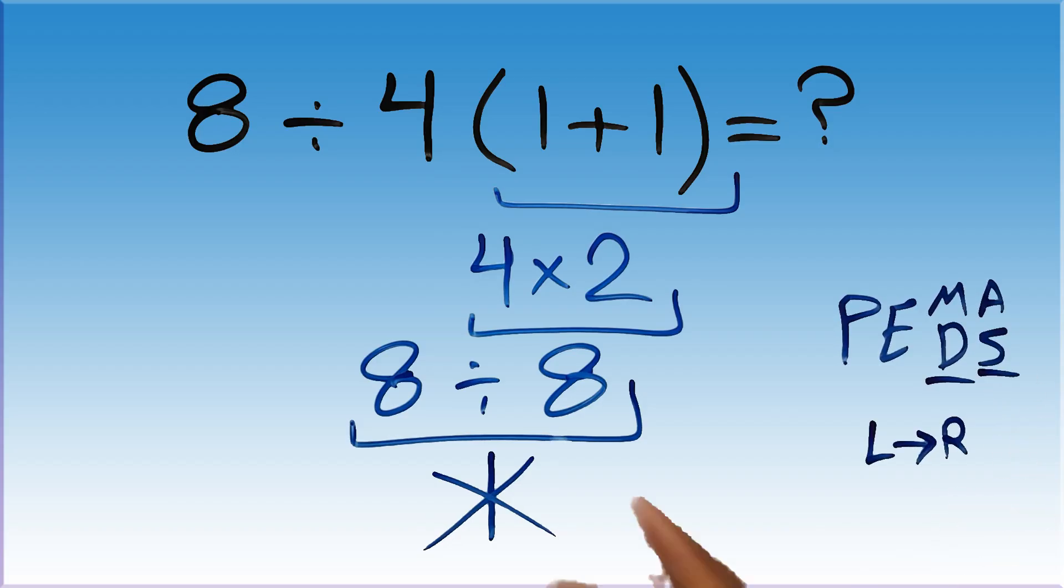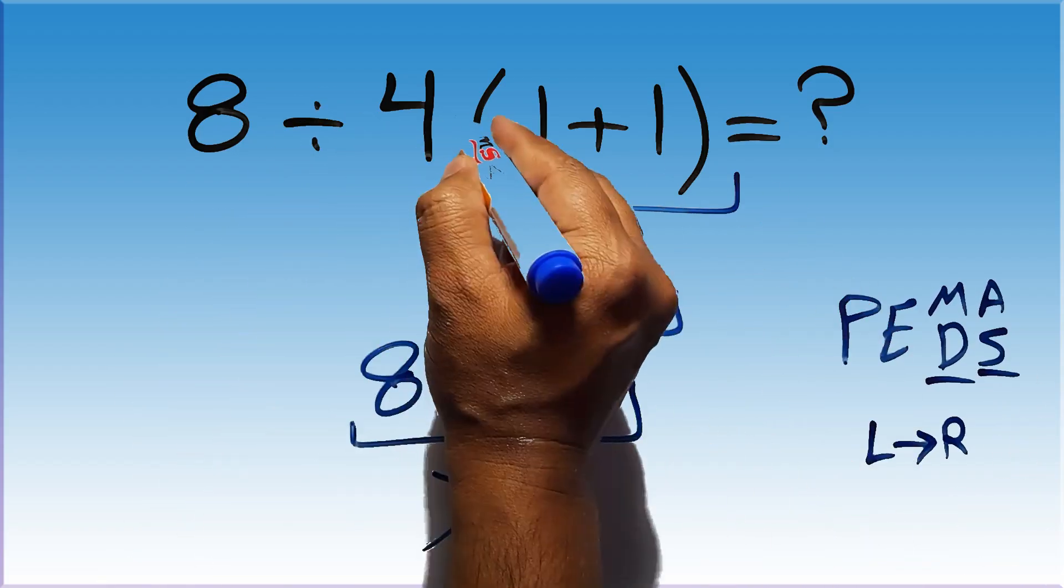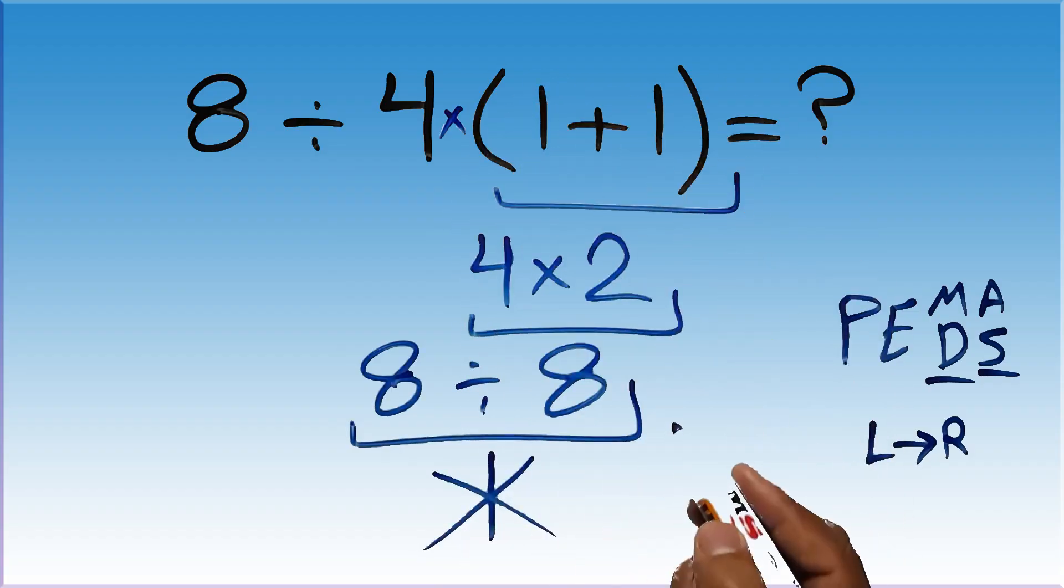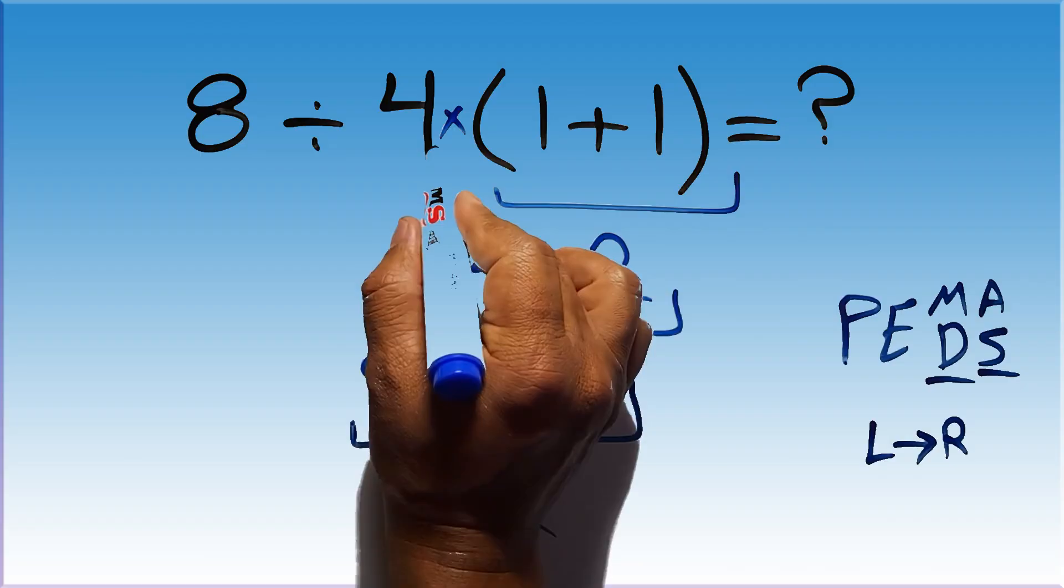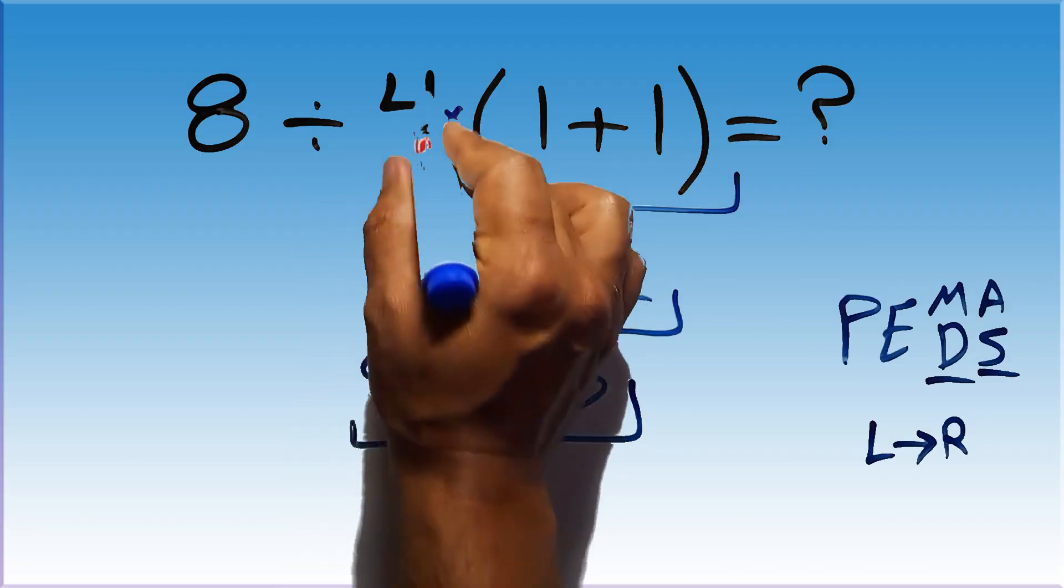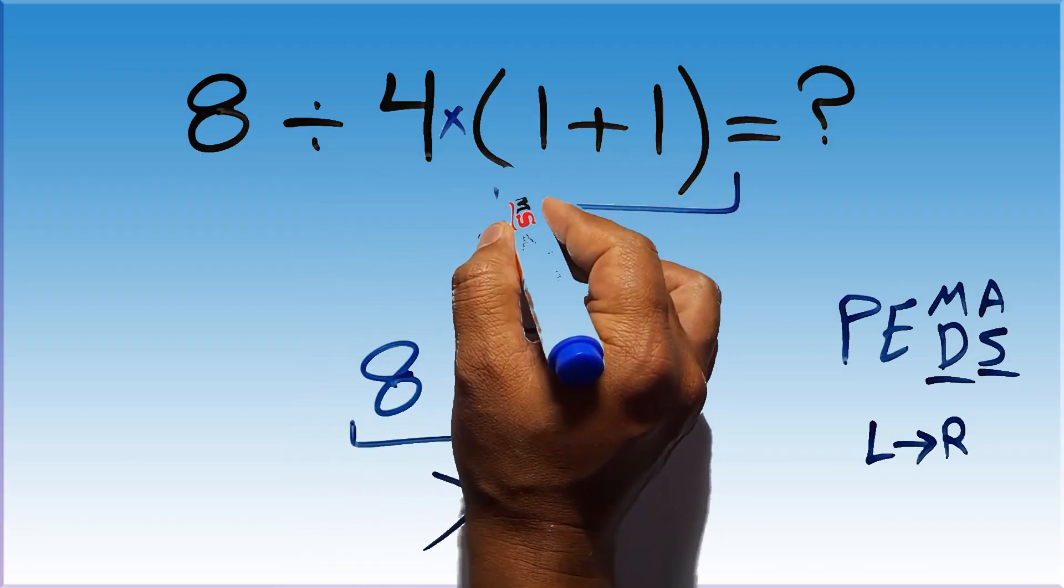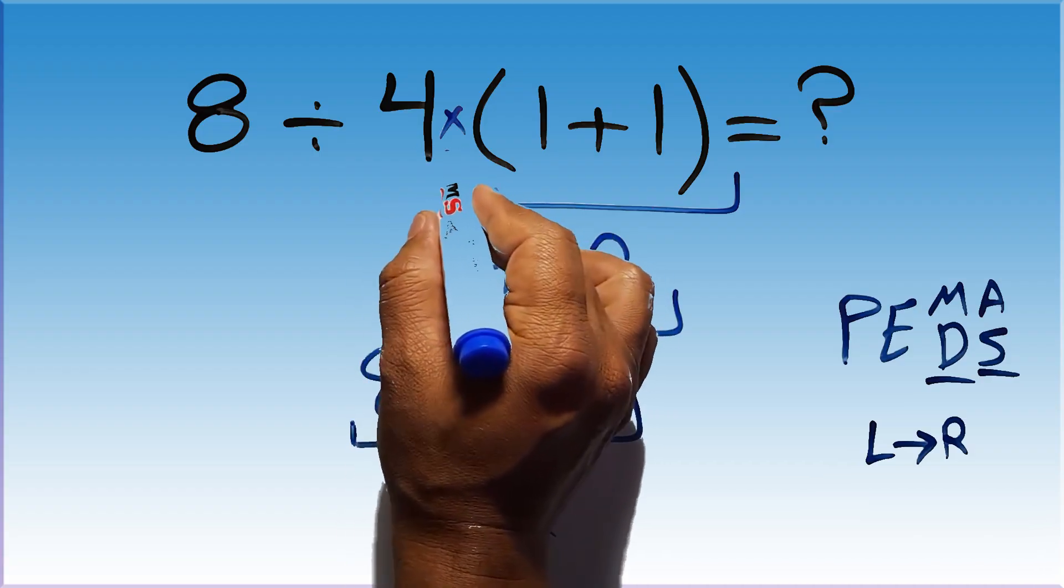In this expression we have one division, one multiplication, and one parentheses. Inside this parentheses we have one addition. Here we have a multiplication because in mathematics when a number is placed next to parentheses it means multiplication and we usually don't write the multiplication sign for brevity.